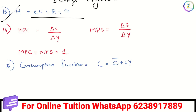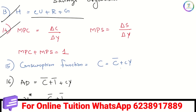The 14th equation: MPC — Marginal Propensity to Consume. MPC equals delta C by delta Y. MPS equals delta S by delta Y. MPC plus MPS equals 1. Therefore MPS equals 1 minus MPC, and MPC equals 1 minus MPS.